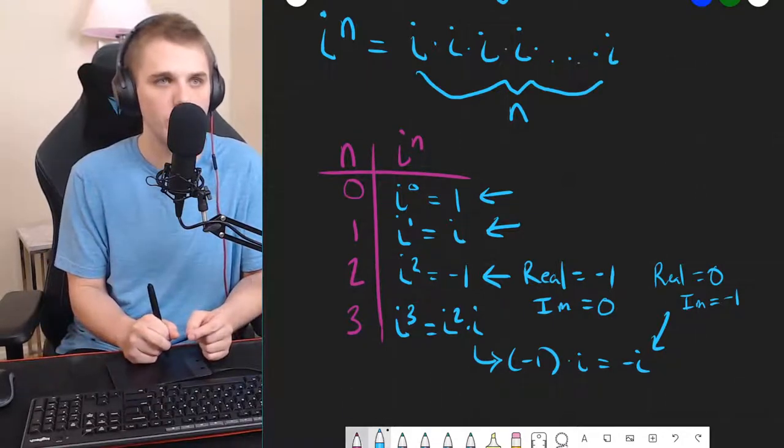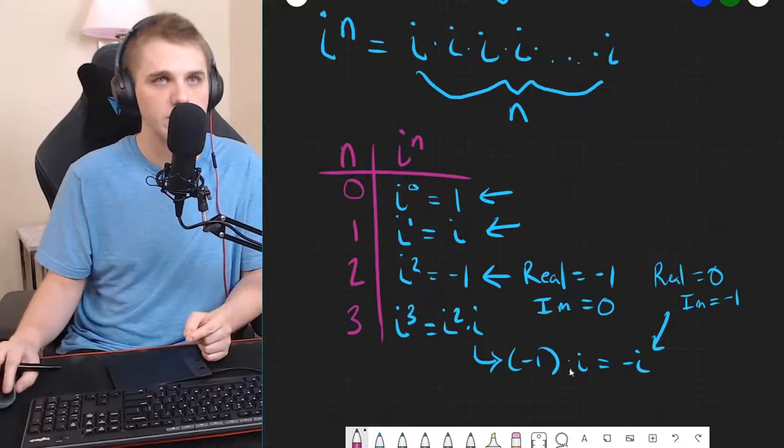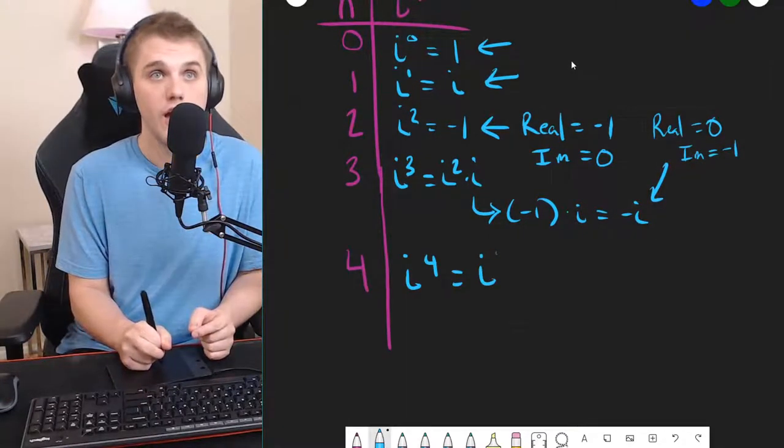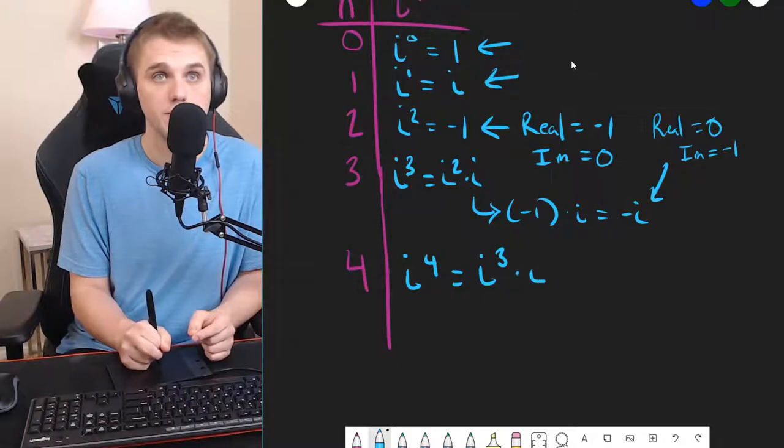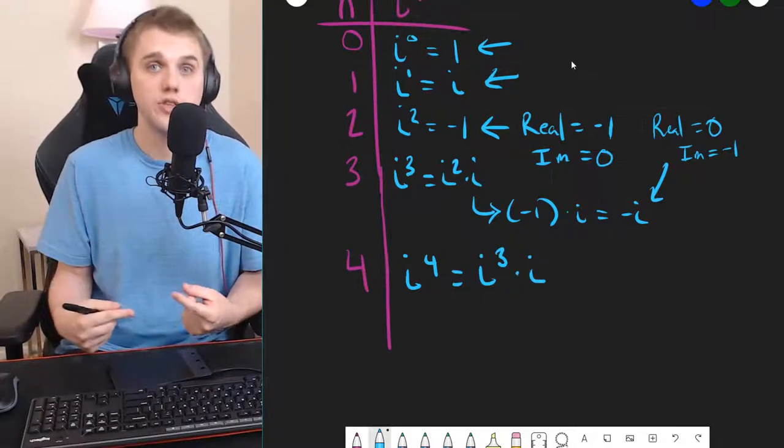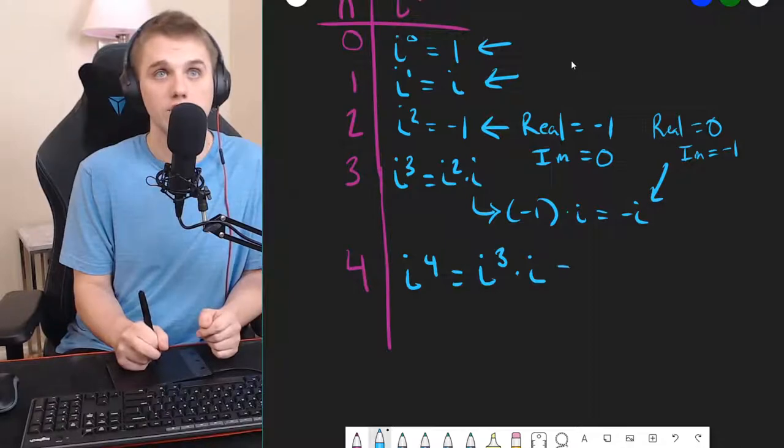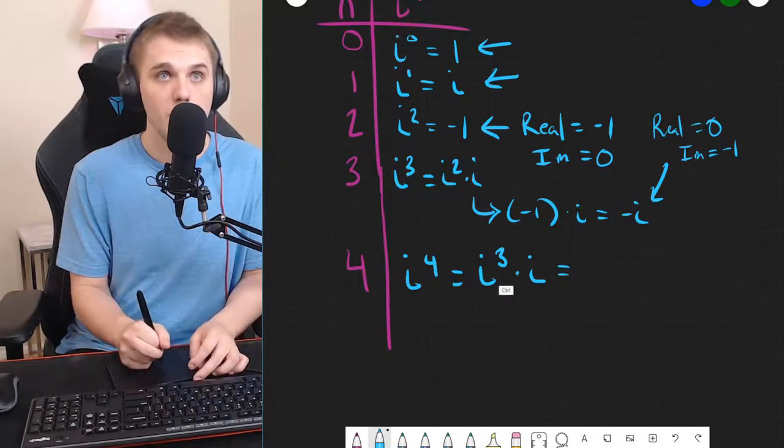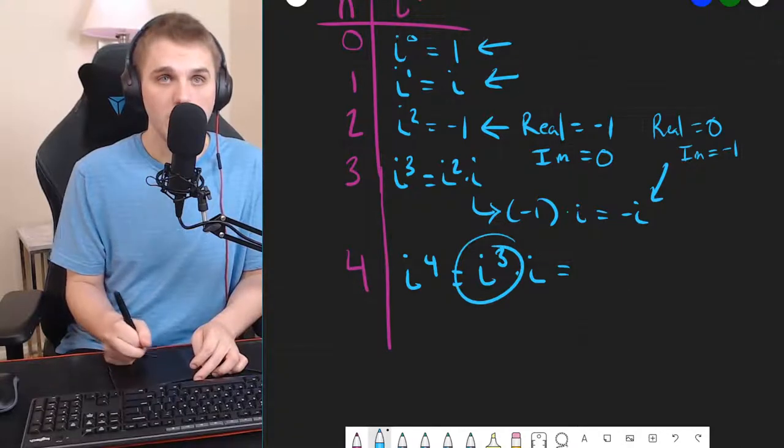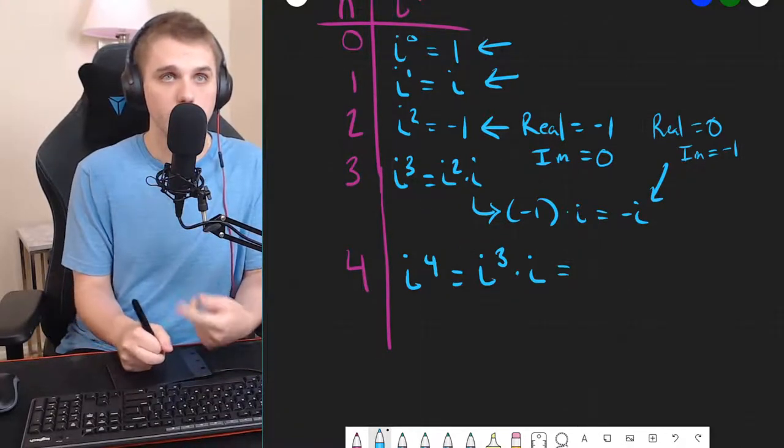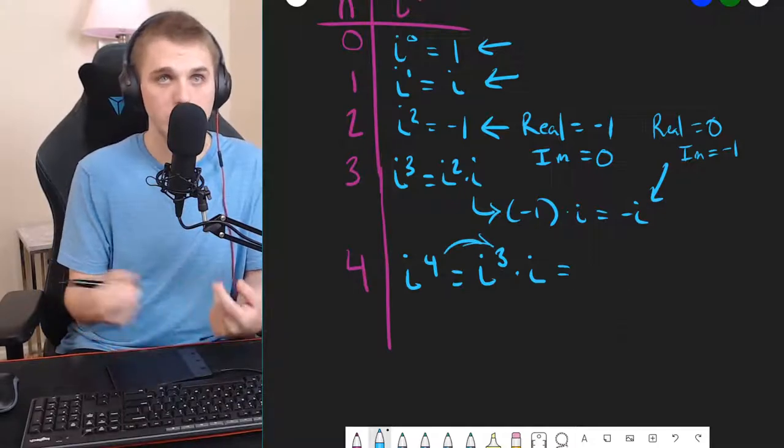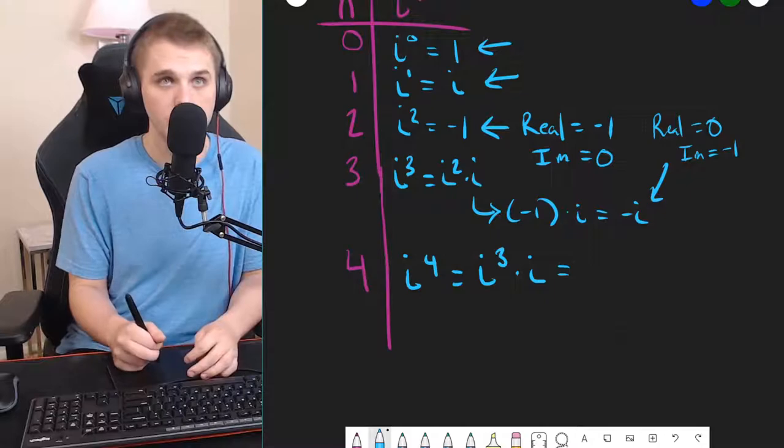Let's see what happens at n equals 4. I'm going to give myself some more room here. Well, i to the 4th is just i cubed times i. And I can always do this because then I can just take the result from above and replace that with i cubed here. And I can just keep doing that with whatever number I have, minus 1. I can just replace with the above result and rinse and repeat.